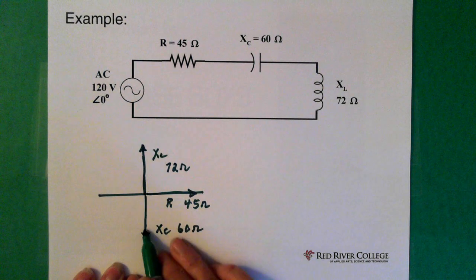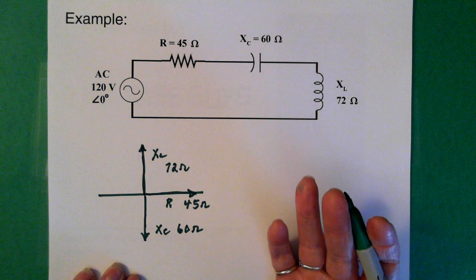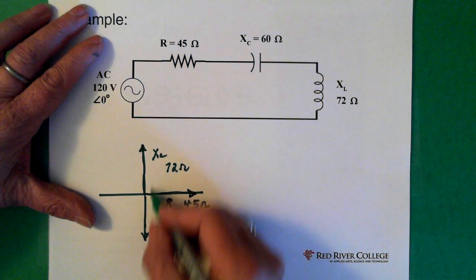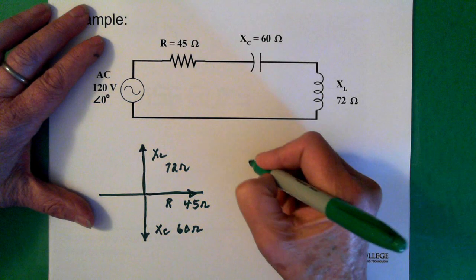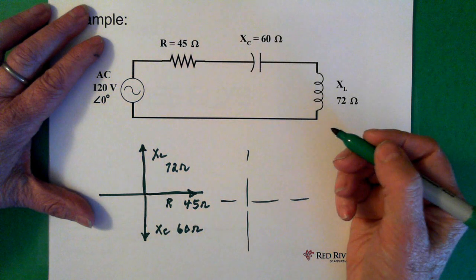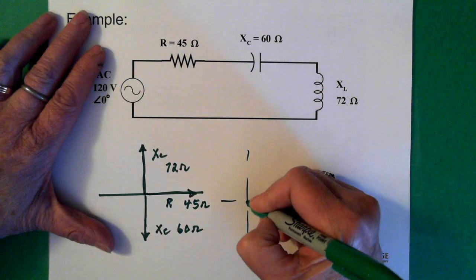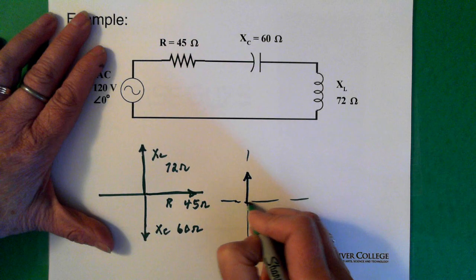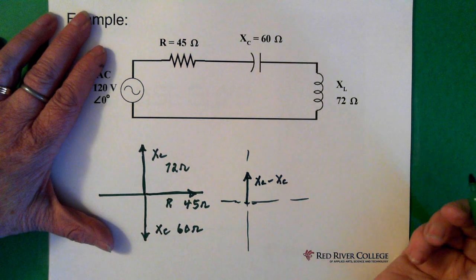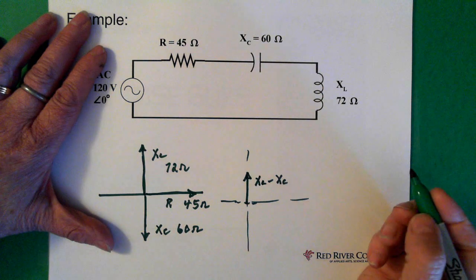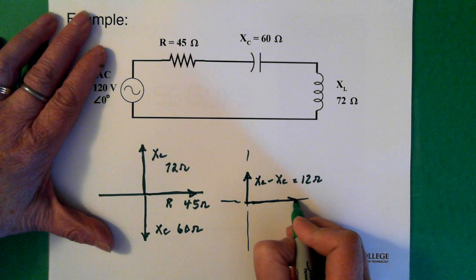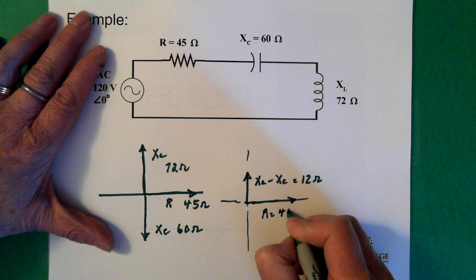So now what we do is we add up the y axis because, especially for a circuit like this, a series circuit, you want to find the total effective resistance. So we have 72 going up, 60 going down. So we just redraw this, and we end up with essentially 12 going up when we add the two together. So the 72 minus the 60 gives us 12 going up on this y axis. So that's the XL minus Xc. And we still have our resistance, which is the 45 ohms.